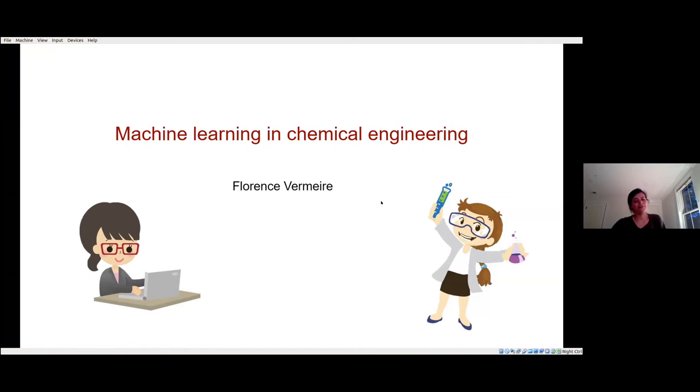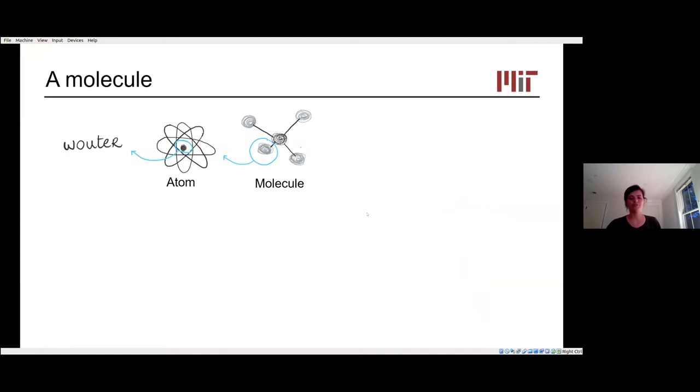Before we start with machine learning or chemical engineering, I want to introduce you to what a molecule is. Let's go back to Roter's talk about neutrinos. When you zoom out from neutrinos, you can go towards an atom. And when you zoom out of an atom and combine different atoms together, we are talking about a molecule.